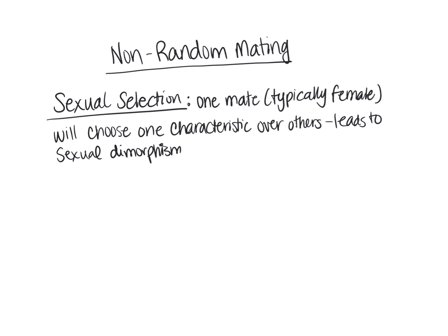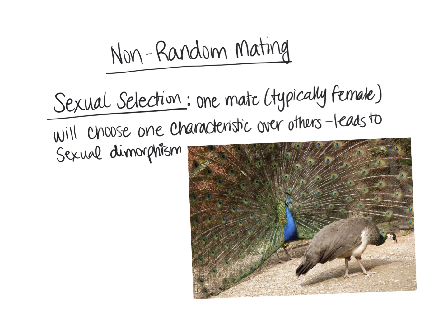This usually leads to what is known as sexual dimorphism. 'Di' means two, 'morph' meaning body or structure — so there is a striking difference between the male and female of a species. You can see here in this image, we've got the male peacock. Over generations of females choosing males with the longest feathers and the brightest, most iridescent colors, you get males that put on displays like this. But notice the female — the peahen — she is not colored the same way and she doesn't have the long feathers, because it was the females that selected for these traits, not the males.